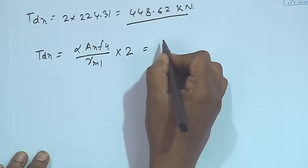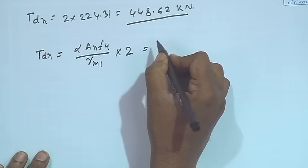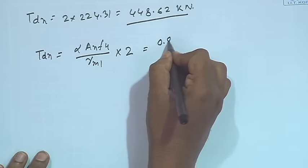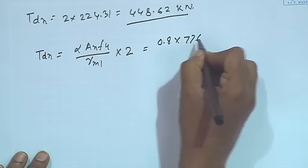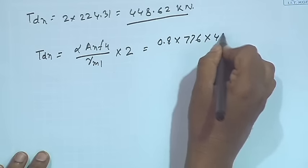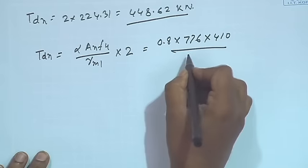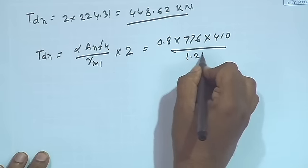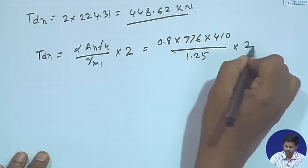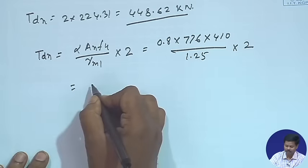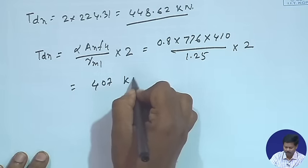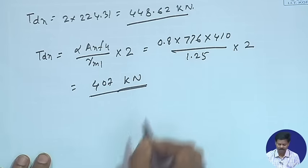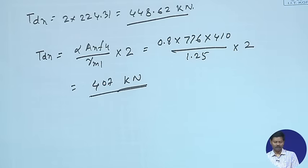Alternatively, we can also find out TDN as alpha × AN × fu / γm1 × 2, just to check how much deviation comes from the earlier calculation. For 4 number of bolts, alpha = 0.8; AN = 776; fu = 410; γm1 = 1.25. So this is coming 407 kilo Newton. Approximately we can calculate TDN as 407 kilo Newton.